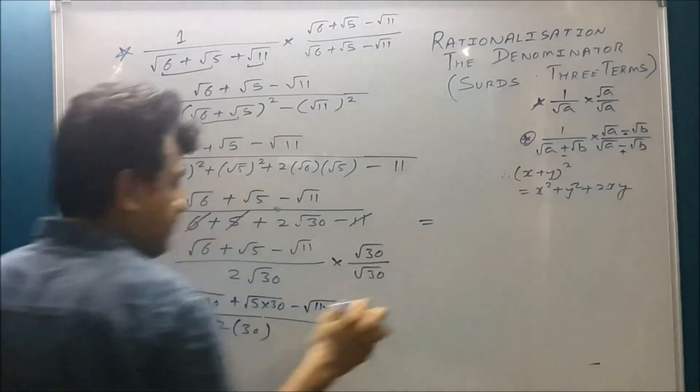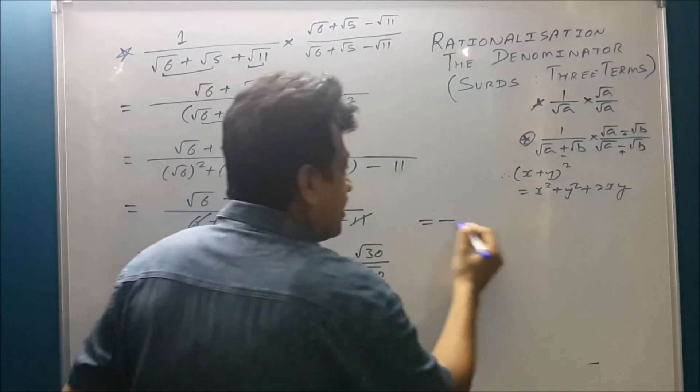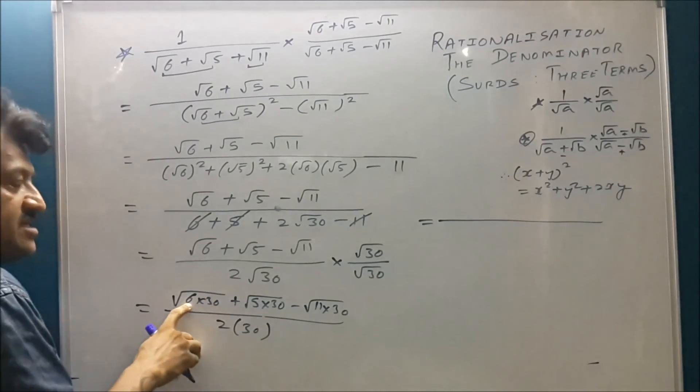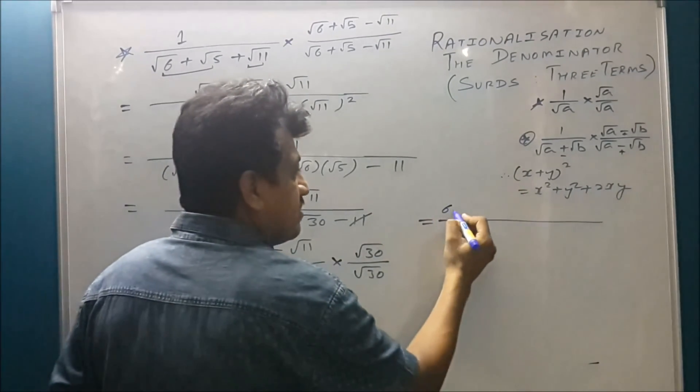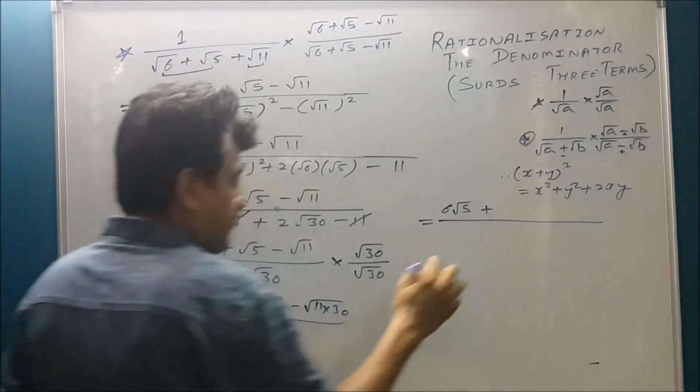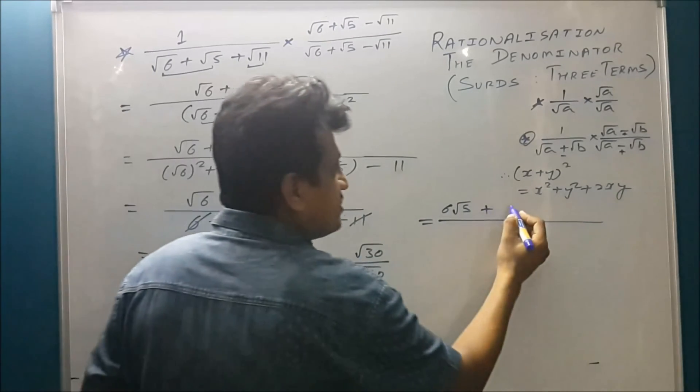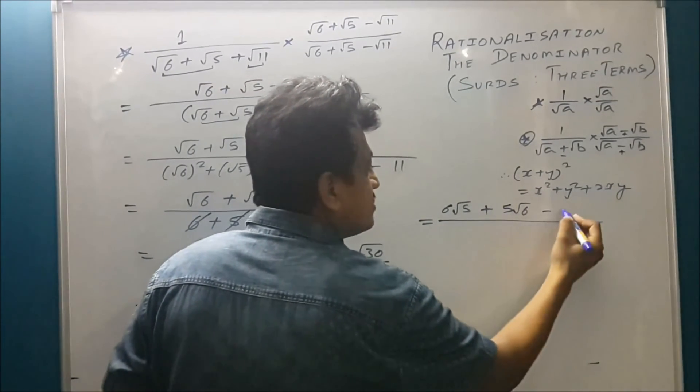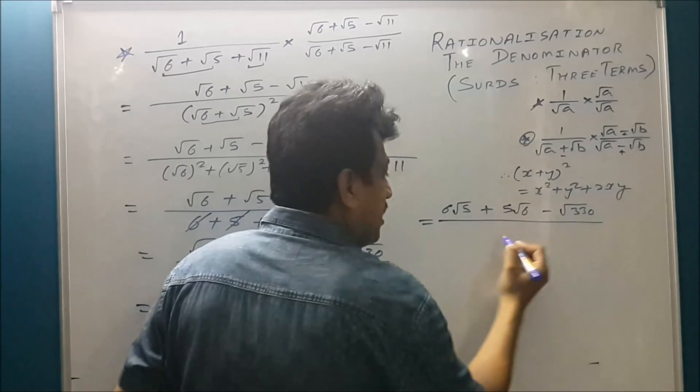So in this step, check it out. There are 1, 6 in 30 and 1, 6 is here. So you can check here. Mix 6 root 5. Here it is 5 root 6 minus root 330 upon 60.